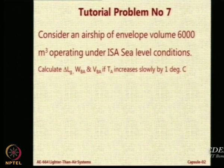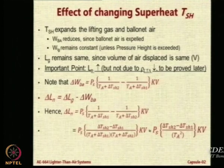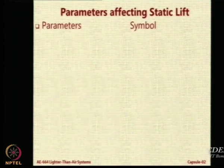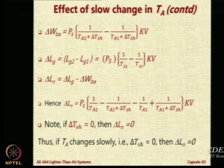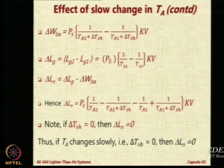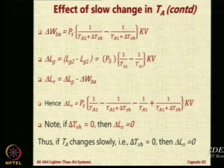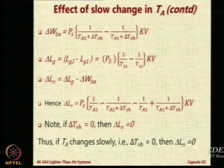Because it is a slow change in temperature, we have to refer to the previous formulae. This is the formula for slow change in temperature. Using this formula, you will have to calculate for an airship flying at sea level under ISA conditions: TA will be 288, PS will be 101325, K you already must have calculated as 0.03416, V is 6000. Always ensure the units are correct.